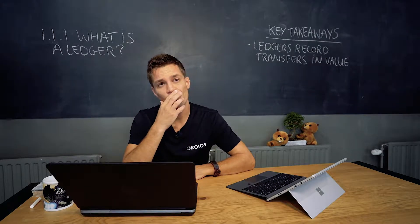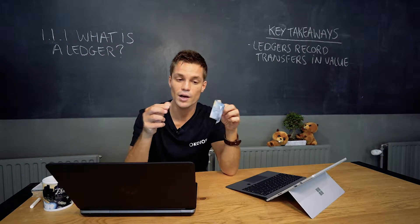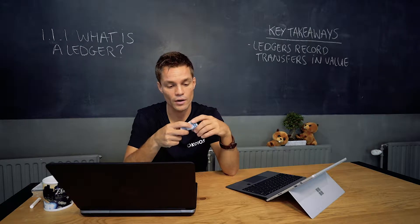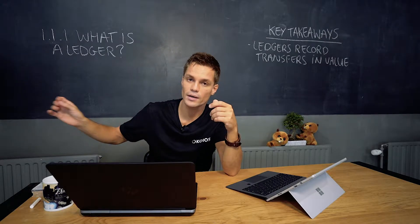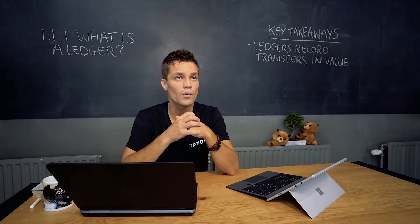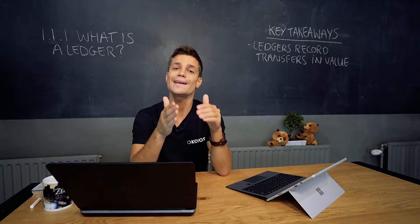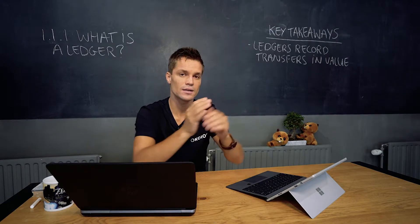Value can be many things — think of two main categories: tangible assets and intangible assets. Tangible assets are things you can actually touch, like a banknote, a car, or a house. Intangible assets are things you can't touch — for example, money on your bank account, which only exists in the digital ledgers of banks, or copyrights, or a right to read an online book. Intangible assets only exist in these kinds of ledgers.